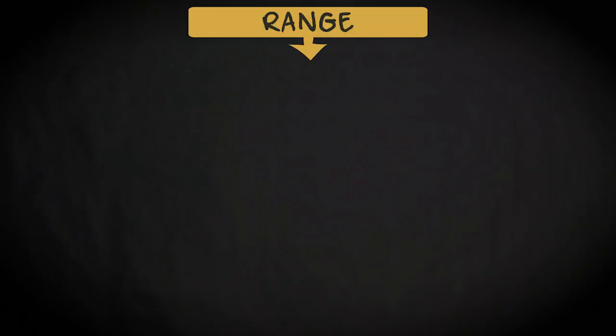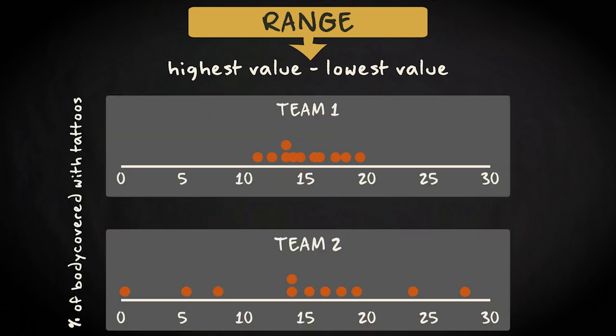The most simple measure of variability is the range. It is the difference between the highest and the lowest value. Let's look at our two teams again. The player in team 1 with the largest tattoo density has covered 19.3% of his body with tattoos. The player with the smallest tattoo density has covered 10.8% of his body. The range is 19.3 minus 10.8 equals 8.5.